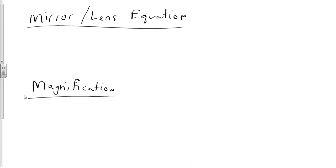The mirror-lens equation is good for any mirror or any lens. One over the focal length equals one over i plus one over o.